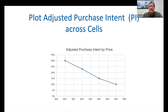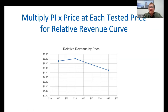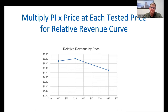Then we plot the adjusted purchase intent across the different cells. Let's imagine we split respondents into four groups: the first saw $25, the second $35, the third $45, and the fourth $55. We might get a nice curve like this if we're lucky. Beyond just looking at the purchase intent pseudo-demand curve, we can multiply the purchase intent by the price at each of the four price points to plot a relative revenue curve. Researchers often look for the revenue maximization price — here we see that it's at $35.